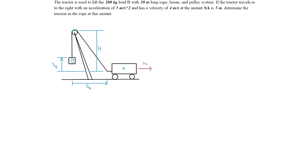In this problem, a tractor is used to lift a 200 kilogram load B with a 30 meter long rope, boom, and pulley system. If the tractor travels to the right with an acceleration of 5 meters per second squared and has a velocity of 4 meters per second at the instant SA is 5 meters, determine the tension in the rope at this instant.